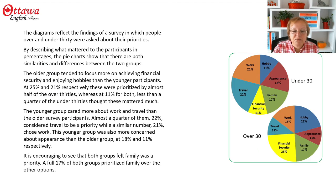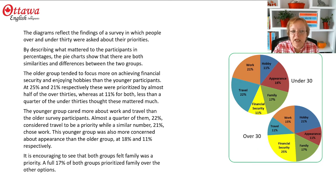So my presentation would sound a little like this. The diagrams reflect the findings of a survey in which people over and under 30 were asked about their priorities. By describing what mattered to the participants in percentages, the pie charts show that there are both similarities and differences between the two groups.